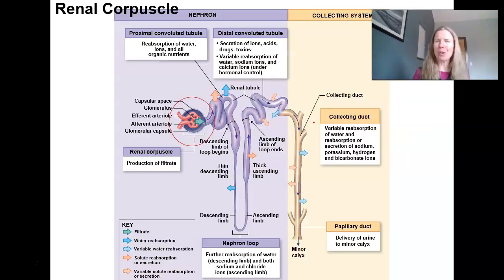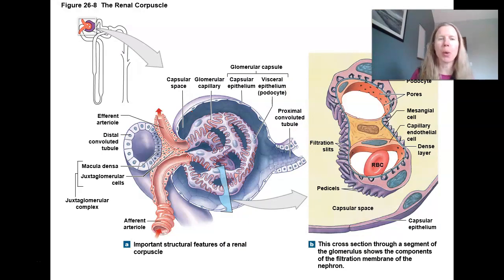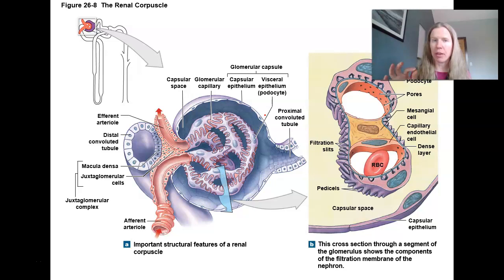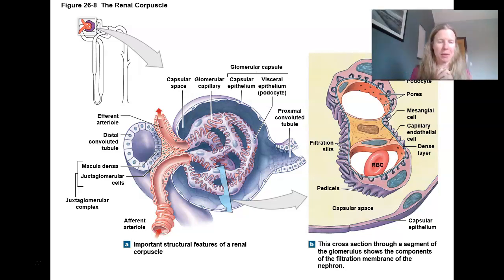Let's look in a little more detail. We're going to start at the renal corpuscle, which includes the glomerulus and the Bowman's capsule — this is where filtration takes place. Anatomically, the renal corpuscle is really fascinating. Zooming in, notice that the capsule is lined in simple squamous epithelium — what they're calling the capsular epithelium. It is continuous with a visceral or glomerular epithelium covering the glomerulus and the capillary.